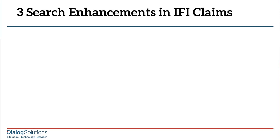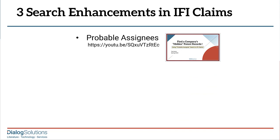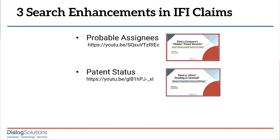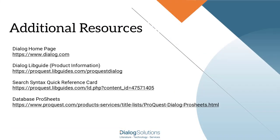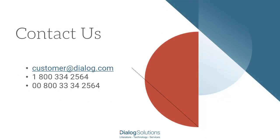So that's it. This video is the last of a three-part series on search enhancements found in the IFI Claims database. The first was on IFI's probable assignee feature, as a way to find patent applications that would otherwise remain hidden from assignee searches. The second was on the patent status feature in IFI, which lets you search by whether a patent is still active or not, or limit published application searches by whether they're pending or granted. And the third of these features is the calculated patent expiration dates. IFI Claims is just one of the 40 patent databases available on Dialog, and each has its own unique and helpful features to provide a total solution for patent searching. For more information, here are some links to additional resources, and if you have any questions, feel free to call the Help Desk or email us at customer@dialog.com. Thanks for using Dialog, and enjoy the rest of your day.